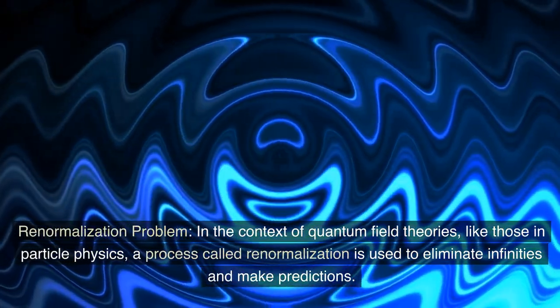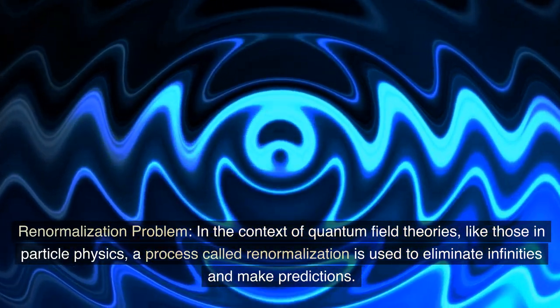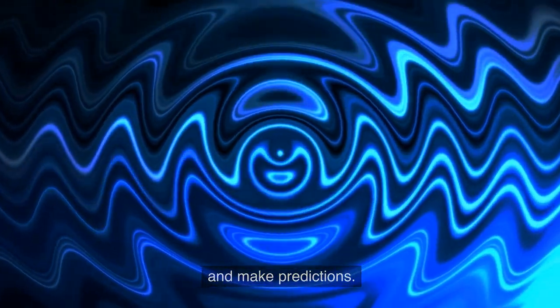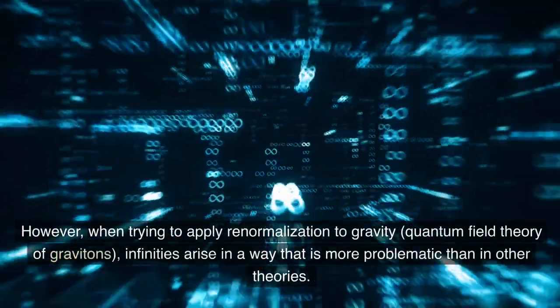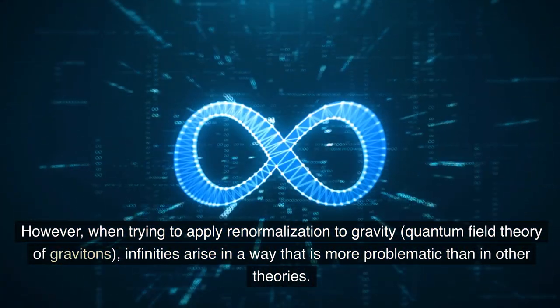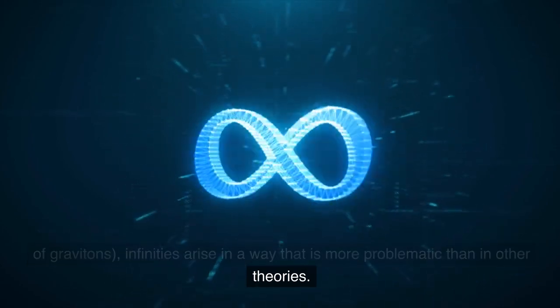Renormalization problem. In the context of quantum field theories, like those in particle physics, a process called renormalization is used to eliminate infinities and make predictions. However, when trying to apply renormalization to gravity, quantum field theory of gravitons, infinities arise in a way that is more problematic than in other theories.